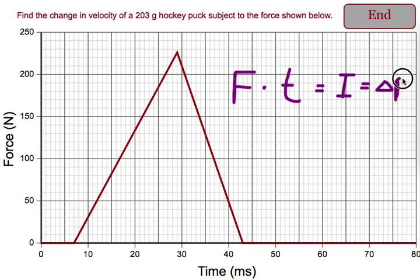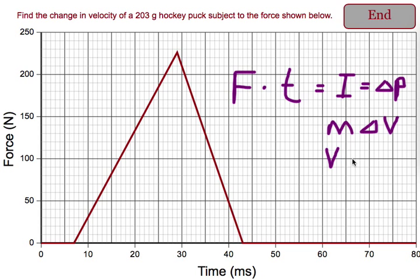Since the puck started at rest, that area — which is our impulse — will be the change in momentum of the puck. Knowing the mass of the puck, we can find the change in speed. Since the puck started at rest, the change in speed will equal the final speed of the puck.